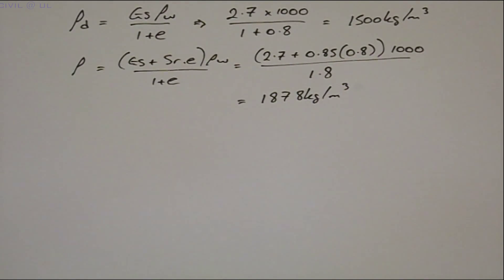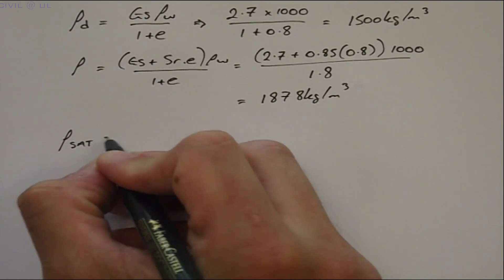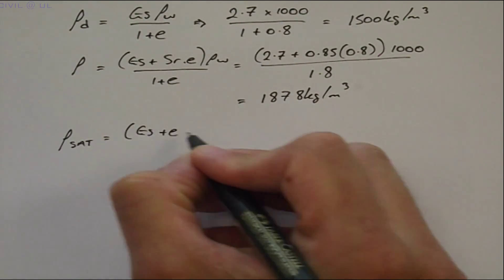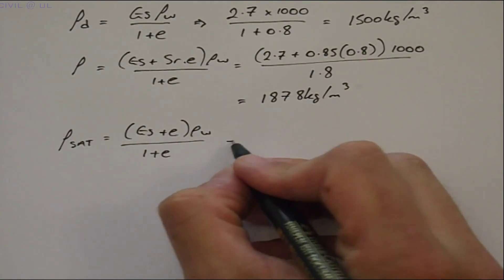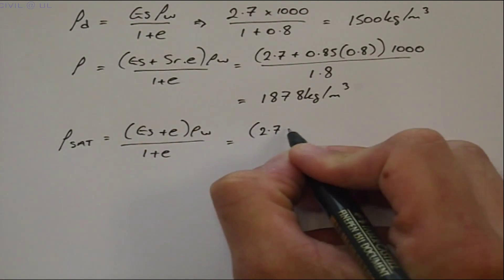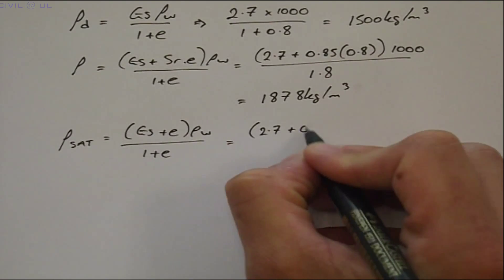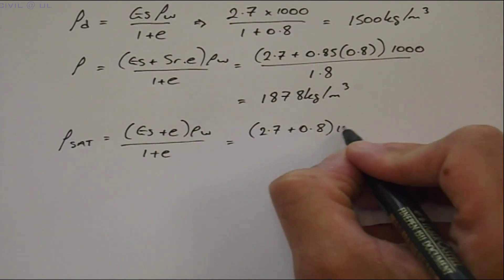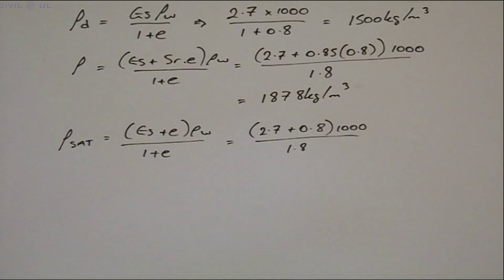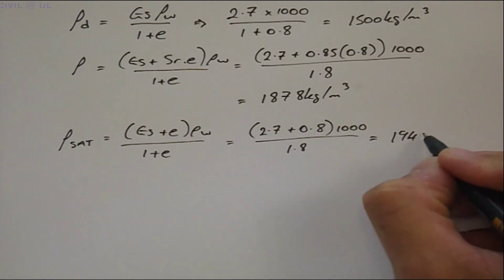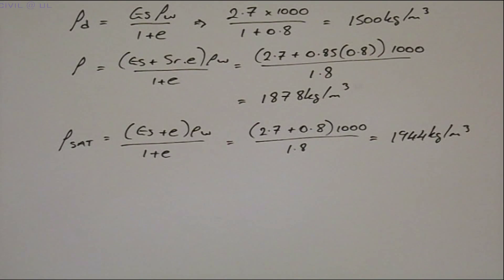The saturated density is equal to GS plus E, all multiplied by ρW, and divided by 1 plus E. Substituting in, we get 2.7 plus 0.8 multiplied by 1000, and divided by 1.8, giving us a result of 1944 kilograms per meter cubed.